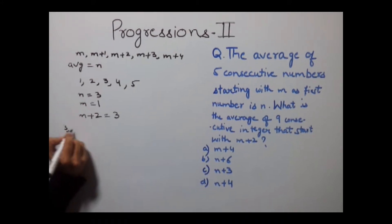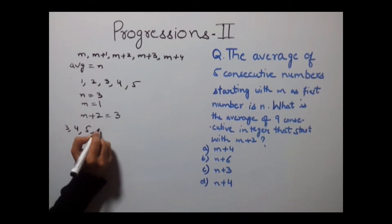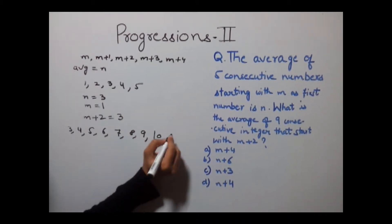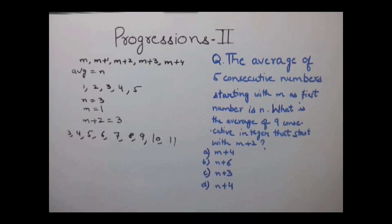So our numbers would be 3, 4, 5, 6, 7, 8, 9, 10, and 11. These are 9 consecutive numbers.